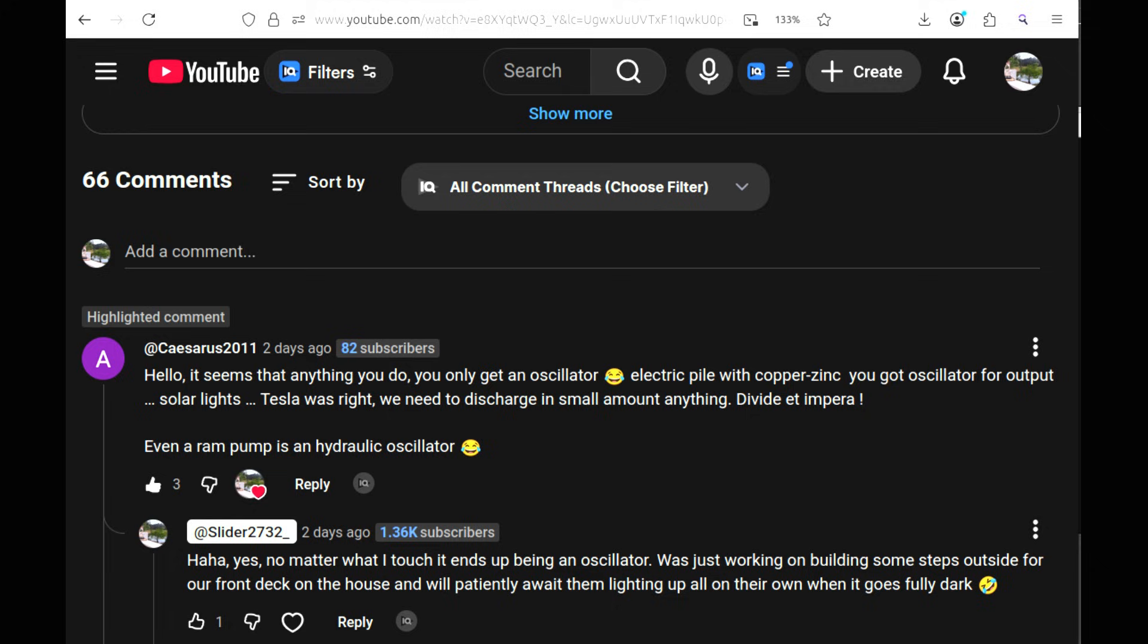Welcome back to the small work table. I've had some great fun chatting with Cesarius2011 who said hello, it seems that anything you do you only get an oscillator. Electric pile with copper zinc, you got oscillator for output. Solar lights. Tesla was right, we need to discharge in small amount anything. Divide ampera. Even a ramp bump is a hydraulic oscillator.